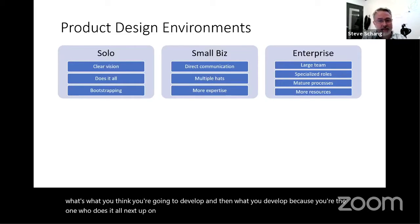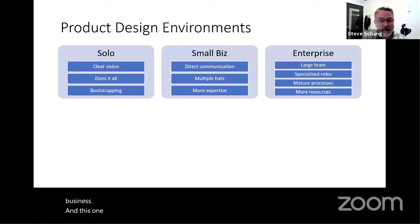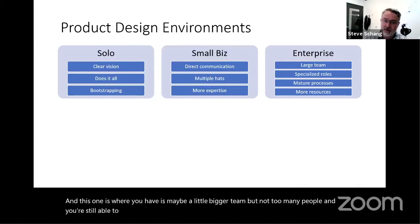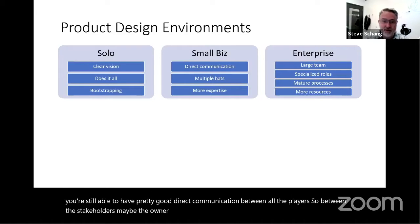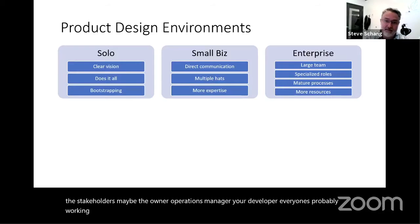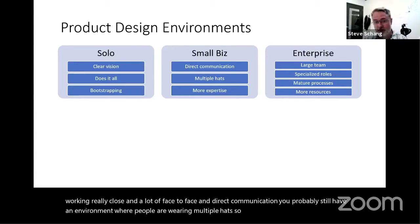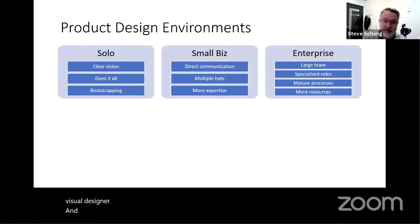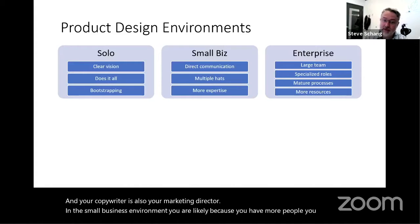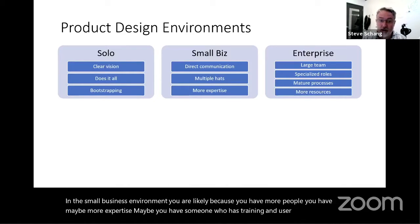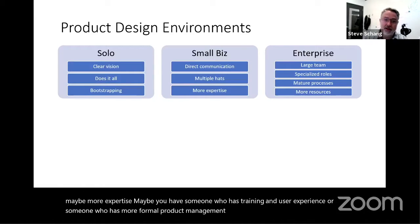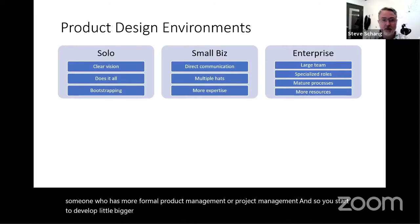Next up on the scale would be a small business, where you have maybe a little bigger team but not too many people, and you're still able to have pretty good direct communication between all players — the stakeholders, owner, operations manager, your developer. Everyone's probably working really close with a lot of face-to-face communication. People are wearing multiple hats, maybe your developer is also your visual designer. You might have someone with UX training or more formal project management.